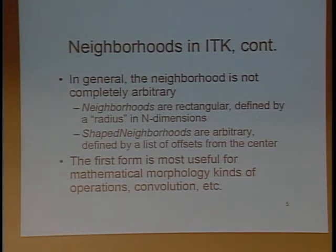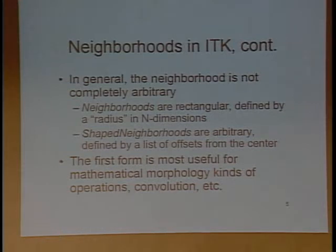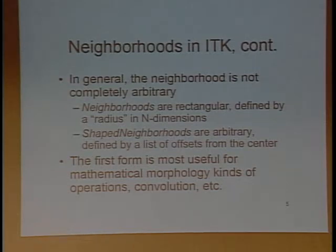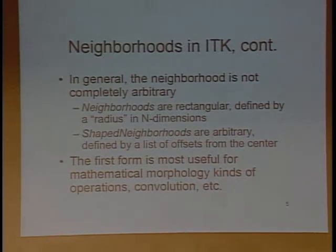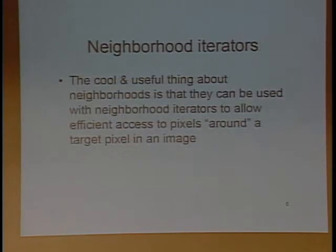Section 11.4 of the ITK software guide introduces the neighborhood iterators. It briefly introduces some basic concepts about neighborhood, and then its two subsections describe neighborhood iterator and shaped neighborhood iterator. For most image processing applications, neighborhood iterator does not need to be as complex as arbitrary shaped - for most applications it's just the common rectangular ones, and its size is defined by a radius. The shaped neighborhood is defined by the user - you can specify a list of offsets of the pixels in a neighborhood from the center. For example, for the convolution operation you will just use a rectangular neighborhood.